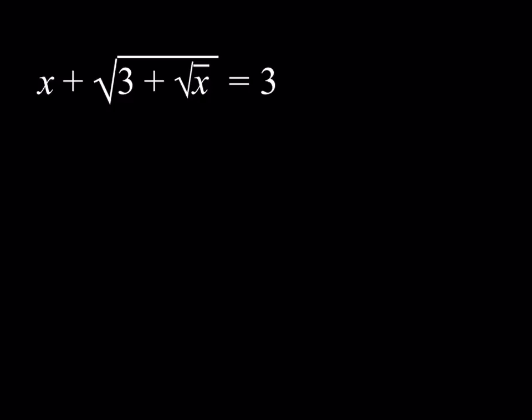Now we do have this radical equation, x plus the square root of 3 plus the square root of x is equal to 3, and we're going to find the real values of x. Now I'll be presenting three different methods, well they're not entirely different but you'll see that there are different approaches.